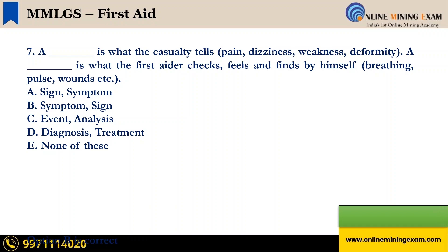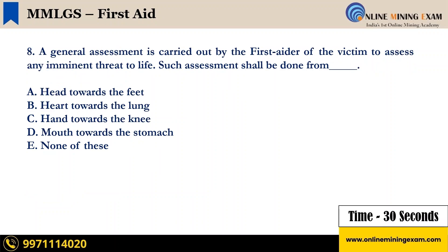Time up. The correct answer is B — symptom, sign. Next question: a general assessment is carried out by the first aider of the victim to assess any imminent threat to life. Such assessment shall be done from — A — head towards the feet; B — heart towards the lung; C — hands towards the knees; D — mouth towards the stomach; E — none of these. Your time starts now.